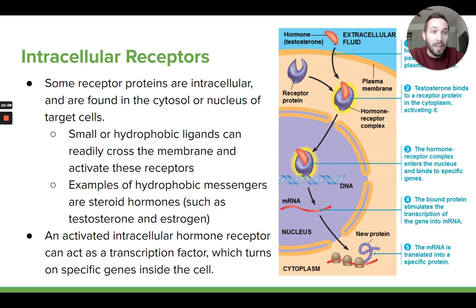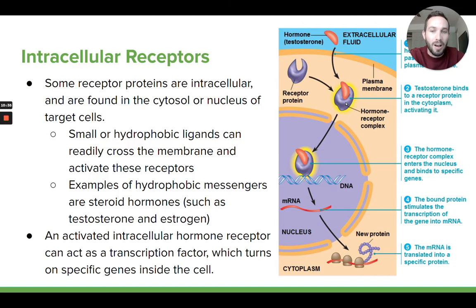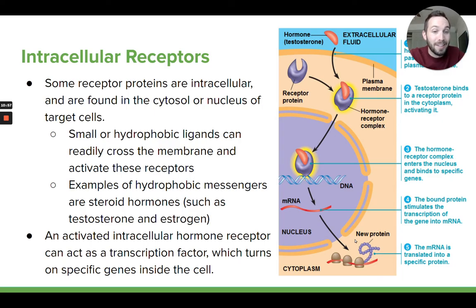When that receptor protein becomes activated, it causes other things to happen in the cell. In this case, these receptor proteins that become activated act as transcription factors. Transcription factors are proteins that can then go transcribe and turn on certain genes. When this receptor protein binds to the ligand and becomes activated, it goes into the nucleus and turns on specific genes inside the DNA. That causes new proteins to be made, and those new proteins can start doing something that needs to happen inside the cell. So the response being produced is that we're turning on new genes and causing new proteins to be made.